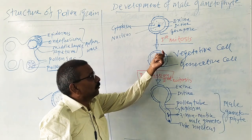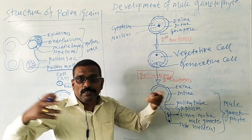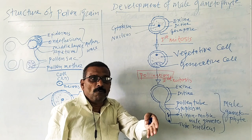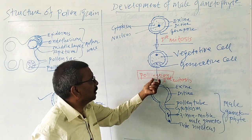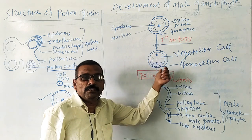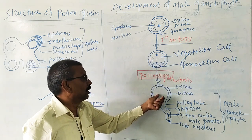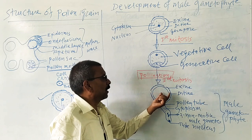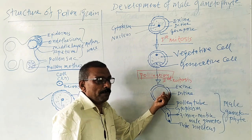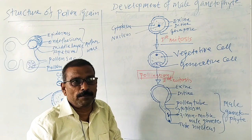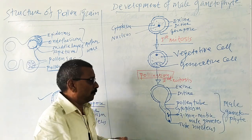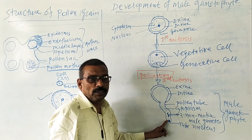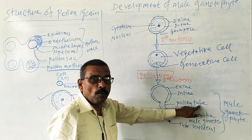At this two-cell stage, pollen grains are released from the pollen sac and transferred onto the receptive stigma of the female reproductive organ — a process known as pollination. The pollen grain deposits on the receptive stigma, absorbs mucilage, swells, and finally bursts open through the germ pore. Then the intine comes out in the form of a tube, known as the pollen tube.